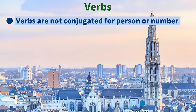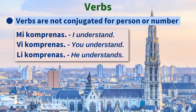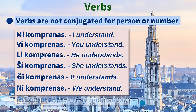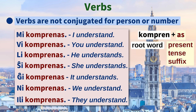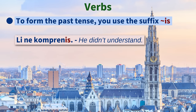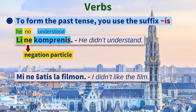Verbs are not conjugated for person or number. "Mi komprenas" (I understand), "vi komprenas" (you understand, singular and plural), "li komprenas" (he understands), "ŝi komprenas" (she understands), "ĝi komprenas" (it understands — ĝi is used for objects or animals), "ni komprenas" (we understand), "ili komprenas" (they understand). The verb is the same in each sentence. The suffix -as is the present tense verb suffix. For the past tense, you use -is: "Li ne komprenis" — He didn't understand. Sentences are negated simply by using the word "ne": "Mi ne ŝatis la filmon" — I didn't like the film.